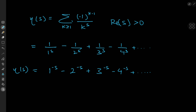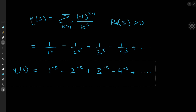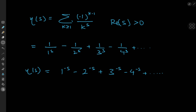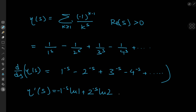This is the eta function, but what I'm interested in is the derivative of this special function. Differentiating with respect to s gives η'(s) on the left. On the right, by the chain rule, all signs are flipped: we get plus 2^(−s) log 2, minus 3^(−s) log 3, plus 4^(−s) log 4. Since log 1 is 0, that term vanishes.